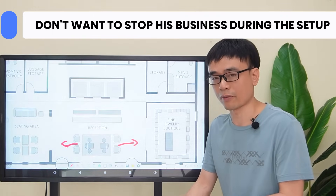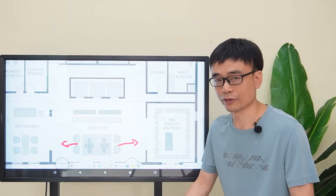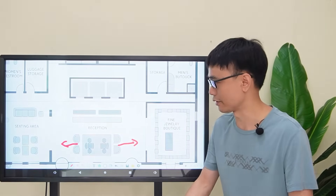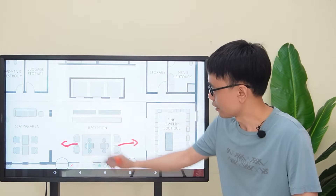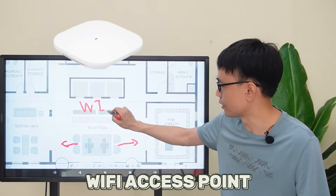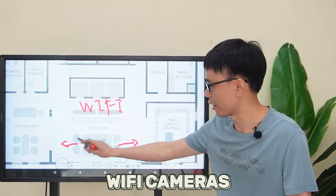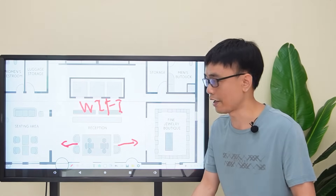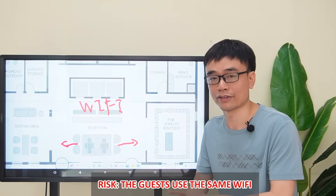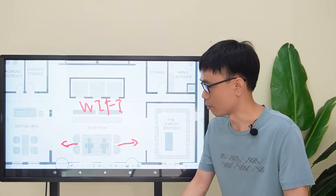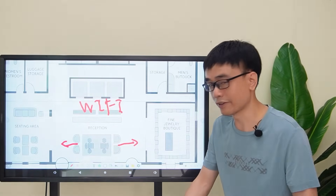The owner doesn't want to stop his business during setup. Since there are guests checking in 24/7, the last thing he wants to do is punch holes in the wall and pull cables from the reception to the control room. There is a Wi-Fi access point at the middle of the hotel, so using Wi-Fi cameras was considered, but it creates a risk since the cameras and guests would share the same Wi-Fi. Moreover, you still need power for these Wi-Fi cameras. So is there a better solution?